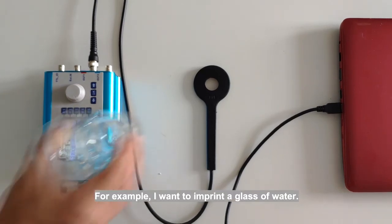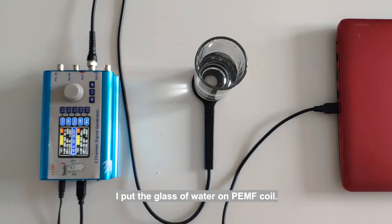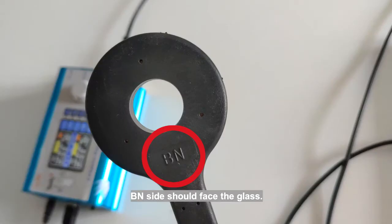For example, I want to imprint a glass of water. I put the glass of water on PEMF coil. B inside should face the glass.